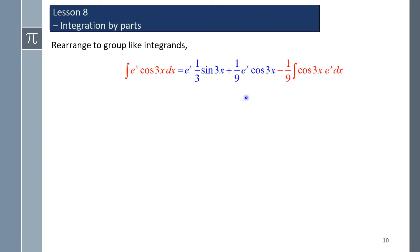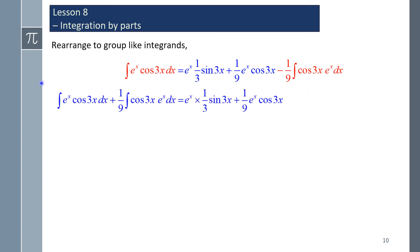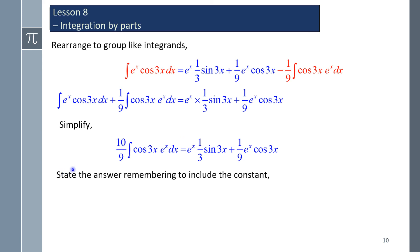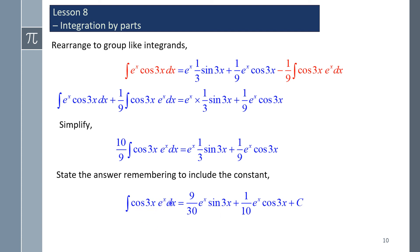Rearranging to group like integrands — highlighted in red — we have eˣ·cos(3x) appearing on both sides. Adding (1/9) of the integral to both sides, we combine like integrands: 1 plus 1/9 is 10/9, giving (10/9) times the integral of cos(3x)·eˣ dx equals the right-hand side. Multiplying both sides by 9/10: 9/10 times 1/3 is 9/30, and 9/10 times the other term gives 1/10. Hence the integral of eˣ·cos(3x) dx simplifies to (eˣ/10) times (3sin(3x) plus cos(3x)) plus c — our final antiderivative.